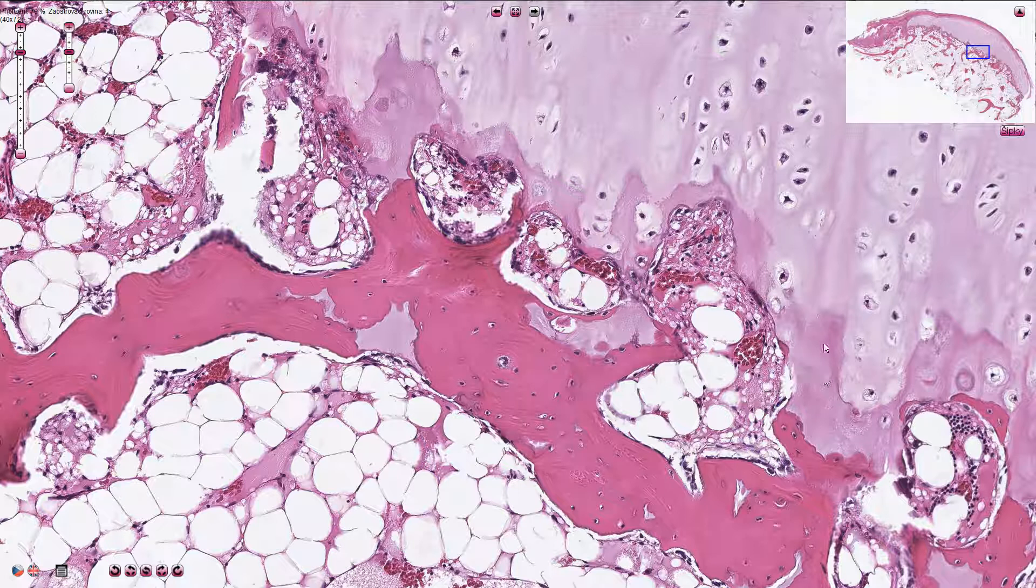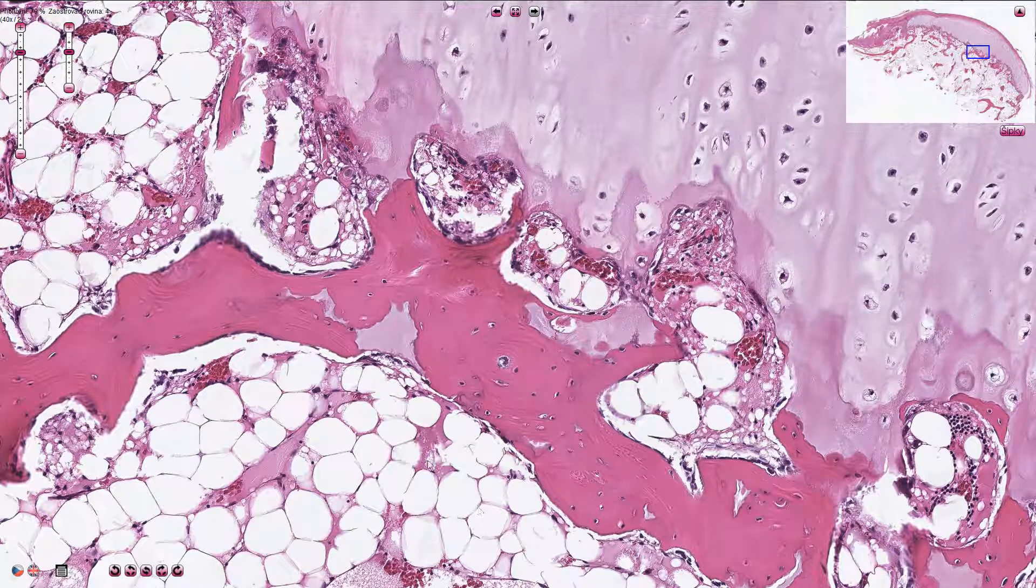This is the area of partial mineralization, and here we have the dense eosinophilic ossification. Around the bone trabeculae we have normal adipose tissue.